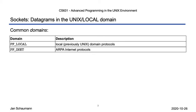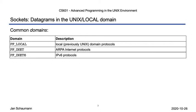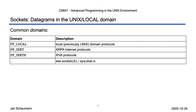If we wish to communicate over the network, we can create a socket in the PF_INET domain, and to communicate via IPv6, the PF_INET6 domain. There are several other domains that may be supported on your system — check the manual page as well as the socket header file for those.